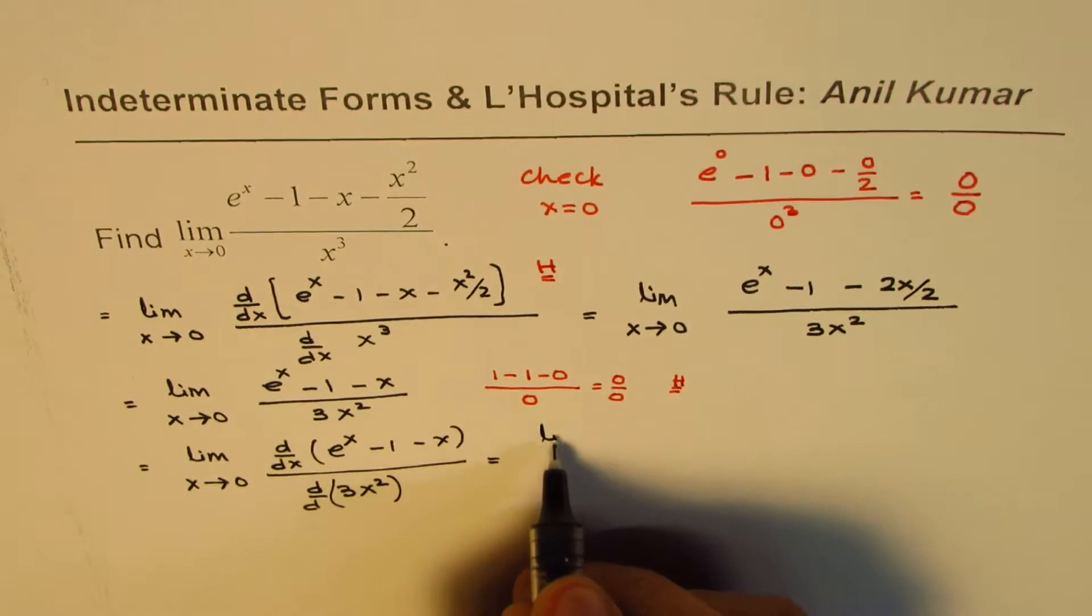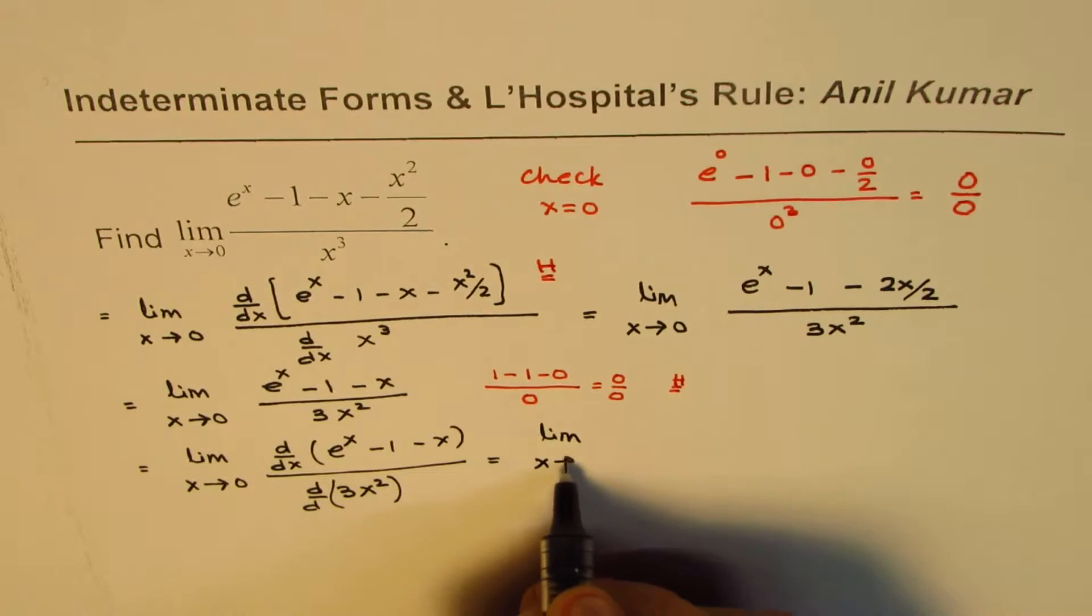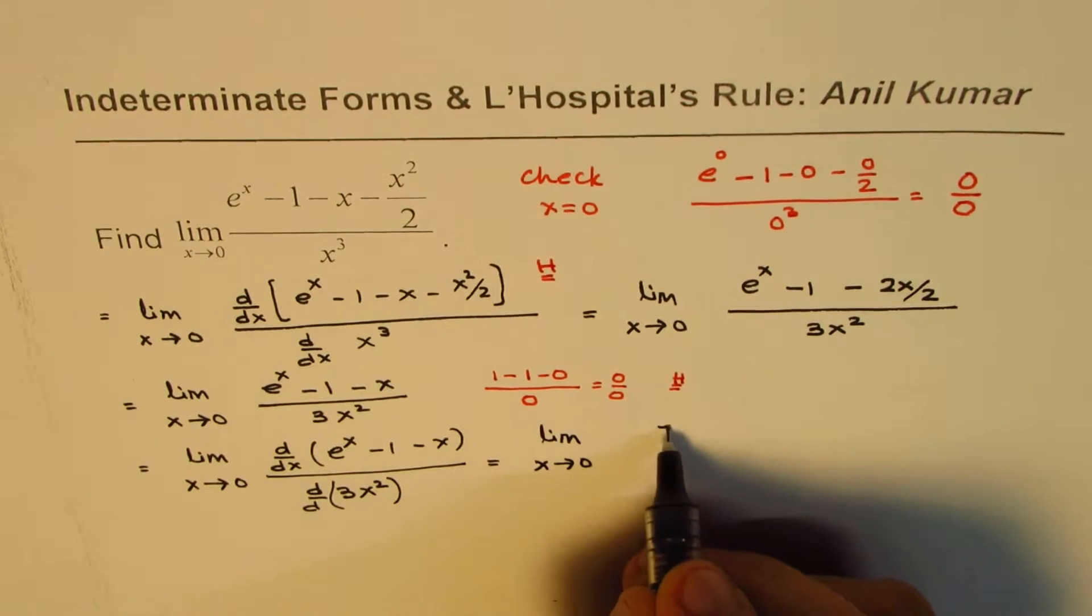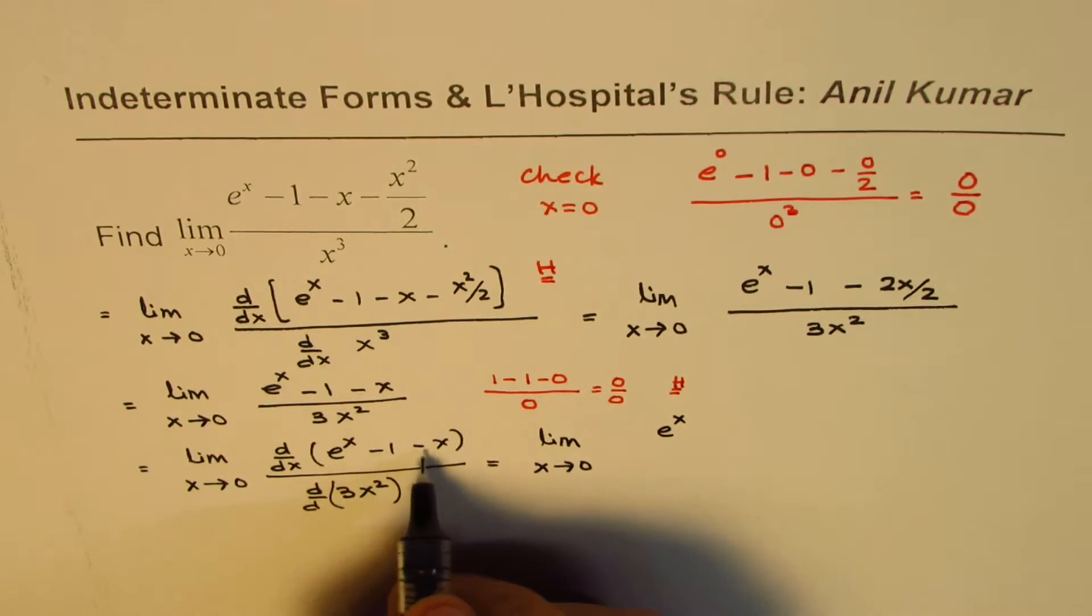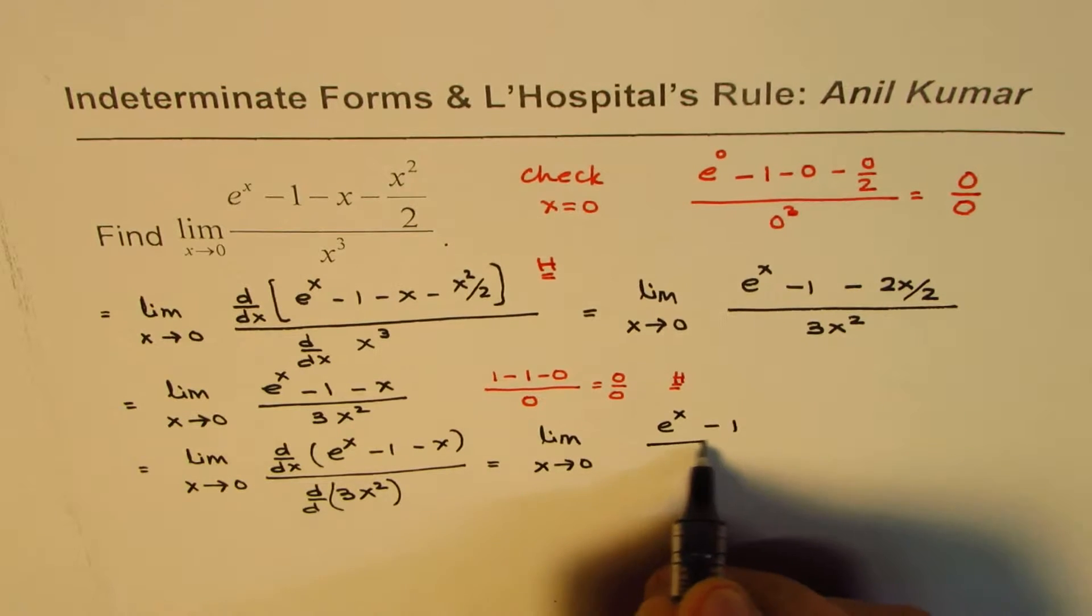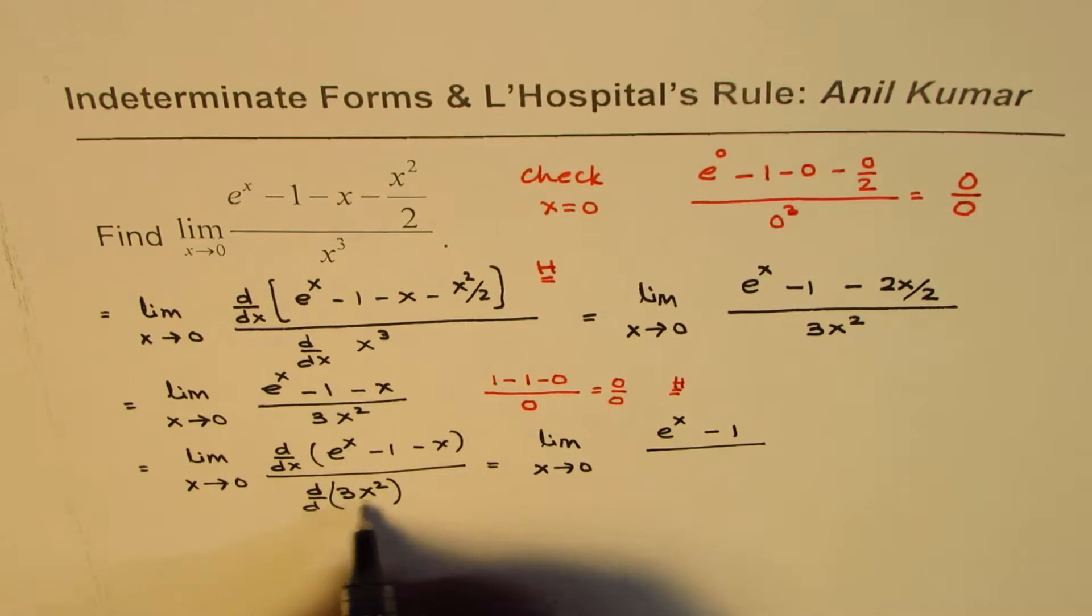This is equal to limit x approaches 0, that gives us e to the power of x, that is 0, this is minus 1, divided by 6x.